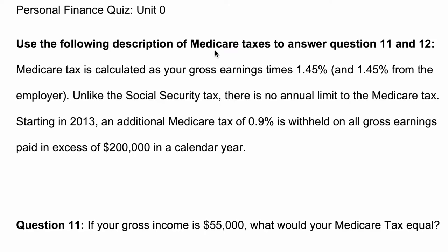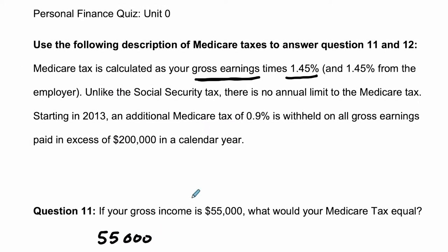Basically what's happening is that you're charged a Medicare tax on your gross earnings. We'll assume our gross earnings are only gross income. So say our gross income is $55,000, times 1.45% — so times 0.0145. You take 1.45% and percent literally means out of 100, so you divide by 100. And this gives you your Medicare tax.